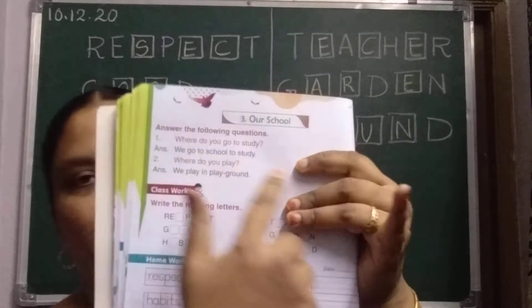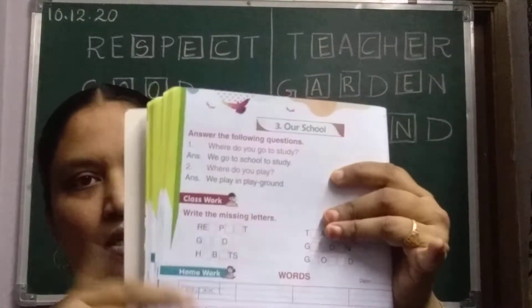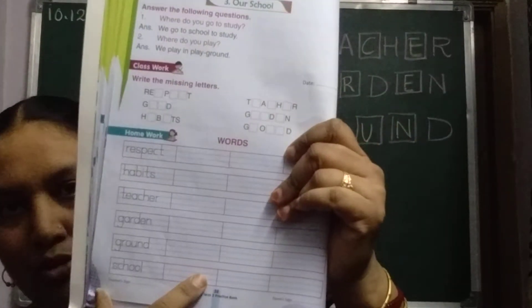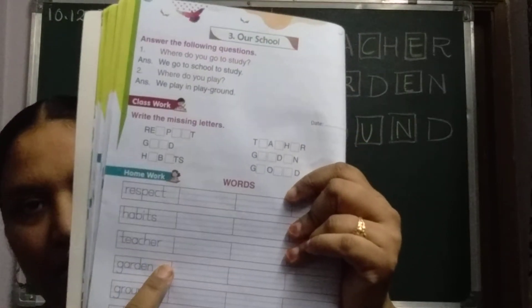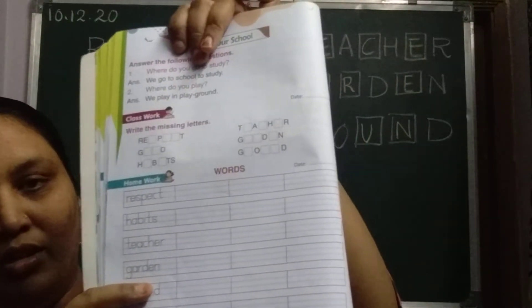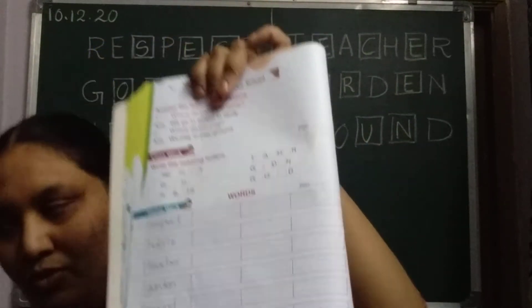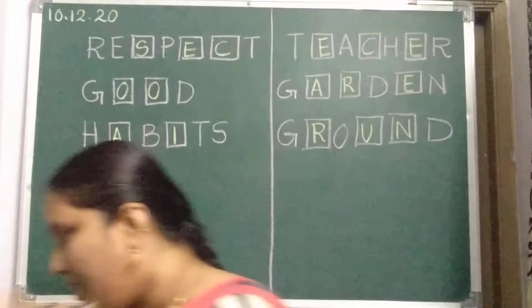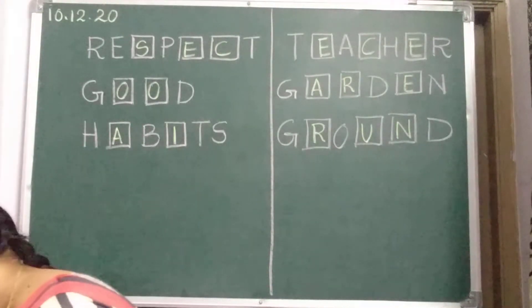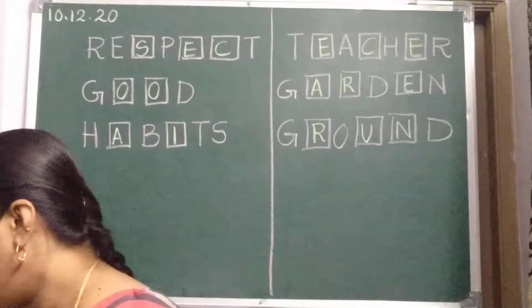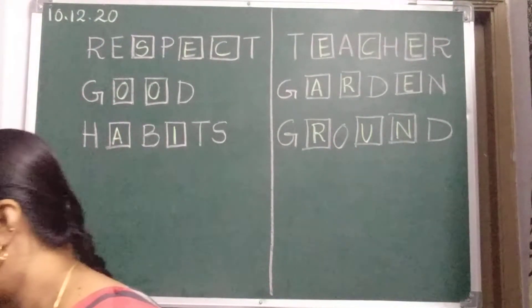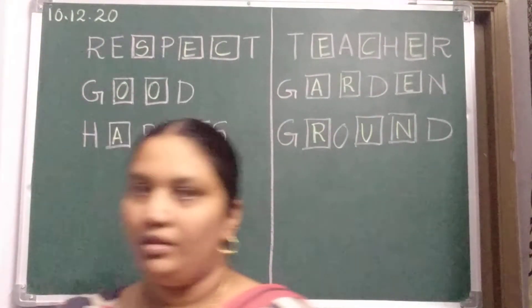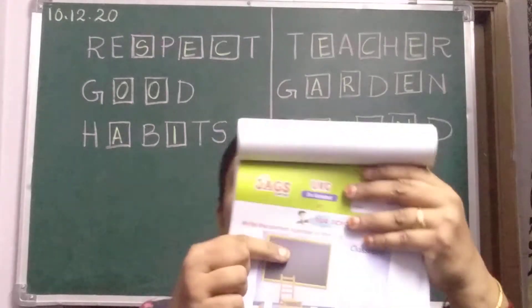These words are finished and these words you already wrote. If you have not completed, complete it and learn all the spellings, children. Now, after writing in the practice book, this is your workbook.